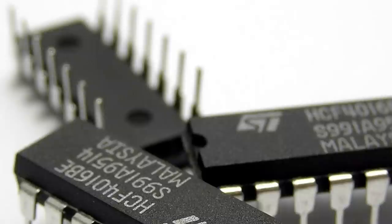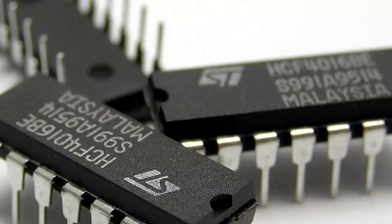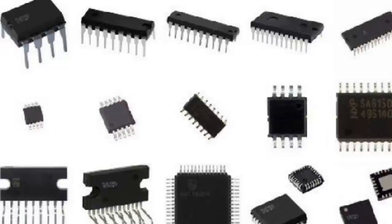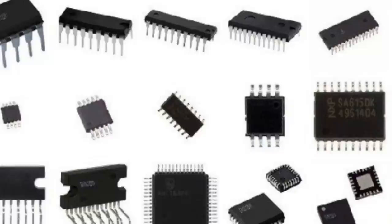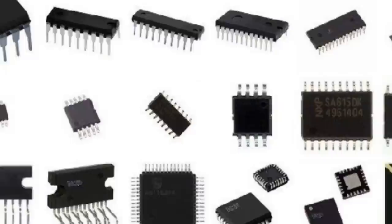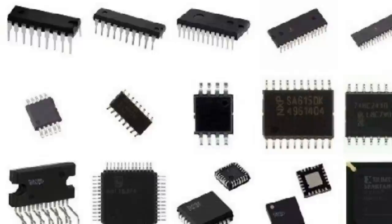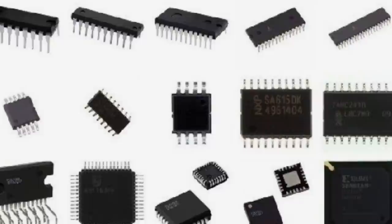A forerunner idea to the integrated circuit was to build small ceramic squares that would hold a single miniaturized component, which would then be integrated into a bi- or tri-dimensional compact grid. This idea was proposed to the U.S. Army by Jack Kilby and led to the micro-module program. As this project was gaining traction, Kilby came up with another design — the integrated circuit. Kilby registered his original ideas for the integrated circuit while working for Texas Instruments in 1958 and demonstrated a successful example in the same year.